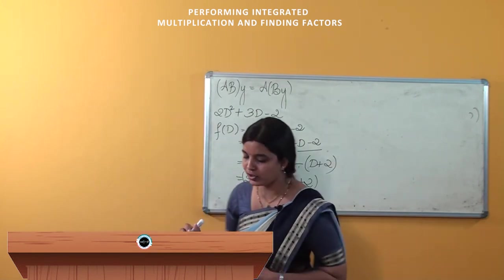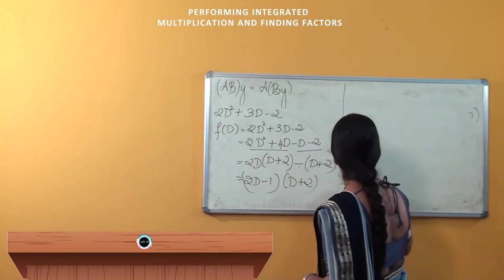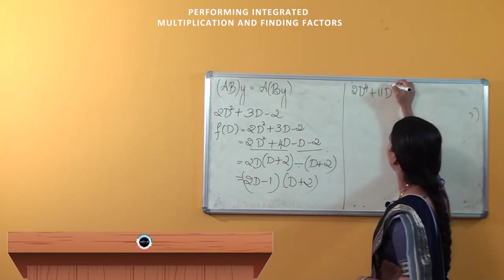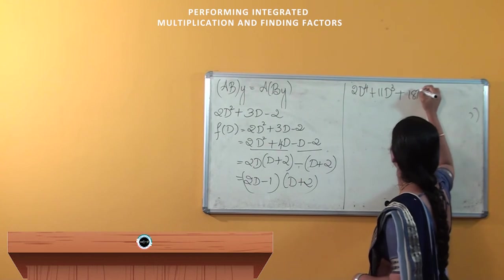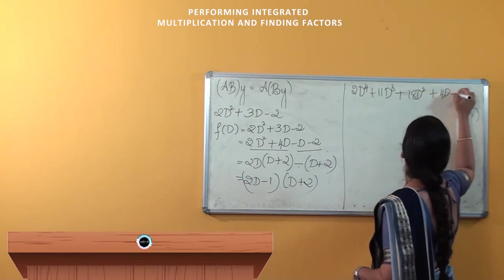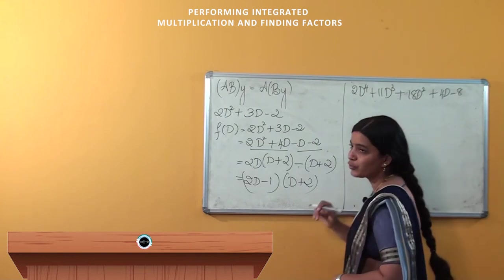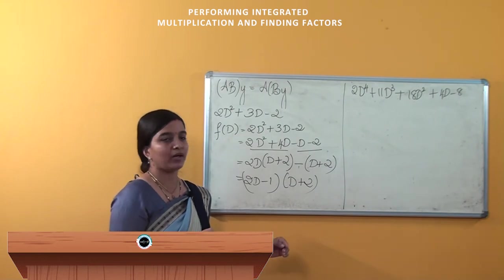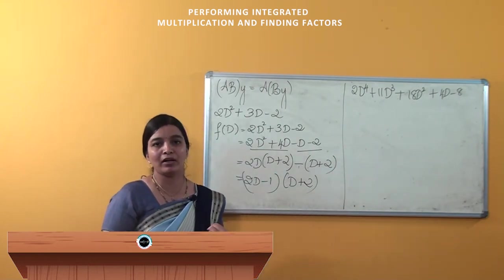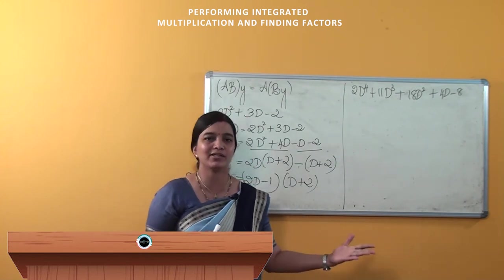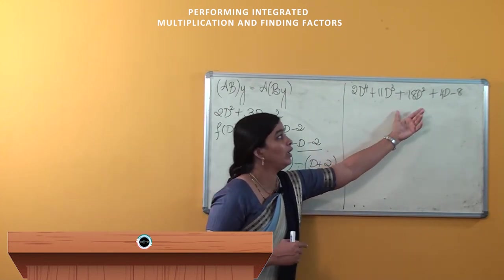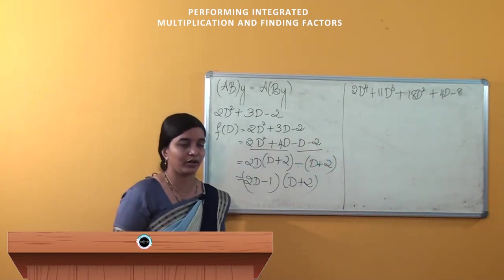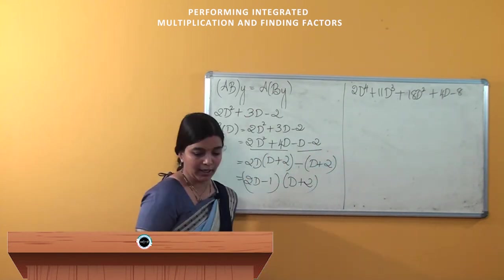Now, suppose a 4th degree equation is given: 2D⁴ + 11D³ + 18D² + 4D − 8. How will we factorize this? We can use the synthetic division method. First, we find one root by trial and error — substituting values 1, −1, 2, −2, 3, −3, or 0 to find which gives zero. Clearly, substituting 0 gives −8, so 0 is not a root.